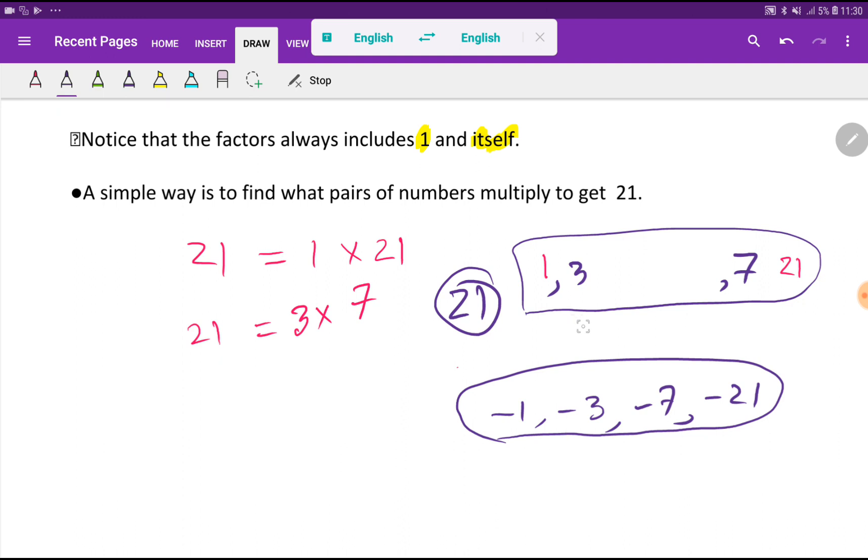I have a blog post. You can read that blog post from the description box of this video. So basically, 21 has 4 positive factors and 4 negative factors. Thank you for watching this video.